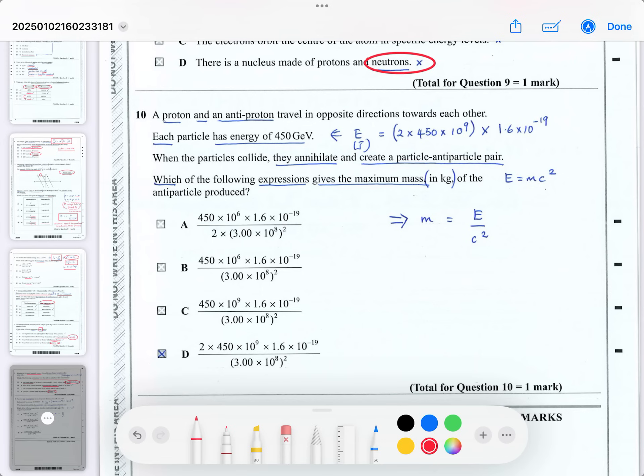Question ten, the last of the multiple choice questions before we take a break. A proton and an anti-proton travel in opposite directions towards each other. So it's a proton and an antiproton. Each particle has a kinetic energy of 450 gigaelectron volts. Well, if you want to work out the energy in joules, you've got to multiply the 450 gigaelectron volts, which is 10 to the 9, by 1.6 times 10 to the minus 19, to get it into joules. And remember, there's two of them, so you've got to multiply it by two, because each one has that 450 gigaelectron volts. So if you know the energy in joules, it says when the particles annihilate, when the particles collide, they annihilate and create a particle-antiparticle pair. So that's new mass that's formed.